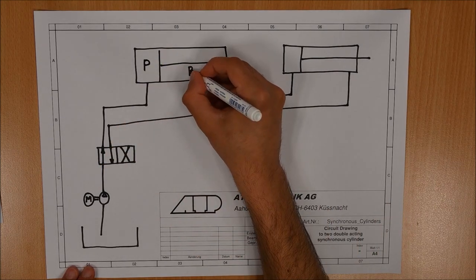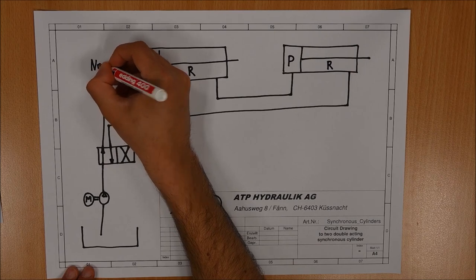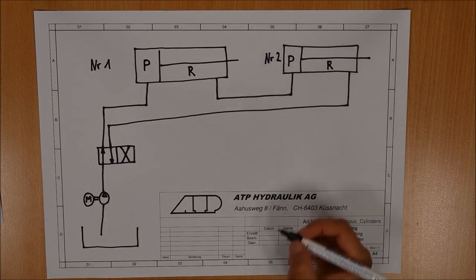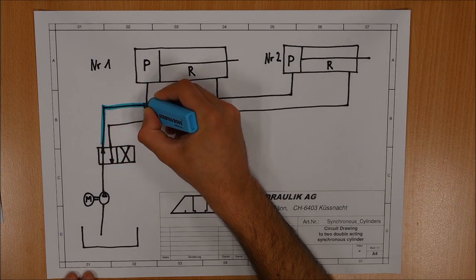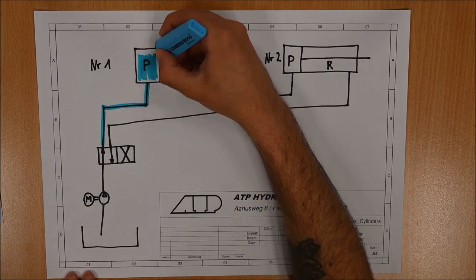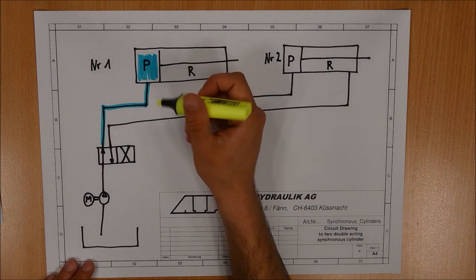The most important part here is the corresponding volume. For the cylinders to act simultaneously, rod side volume of the first cylinder does have to be exactly the same as piston side of the second cylinder.